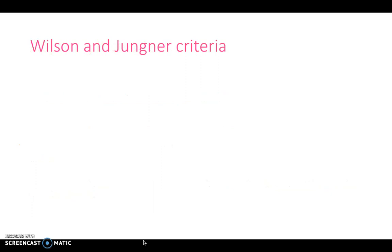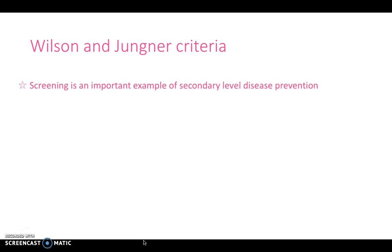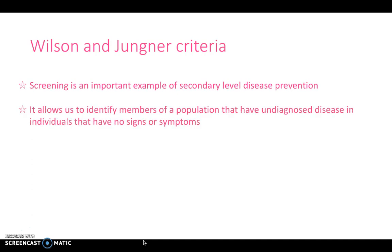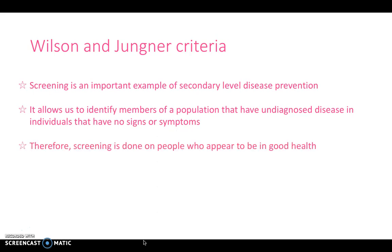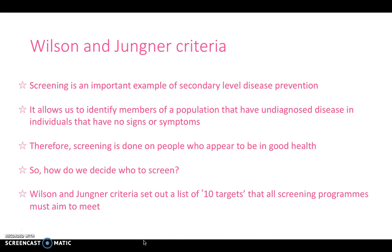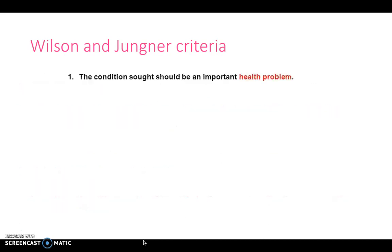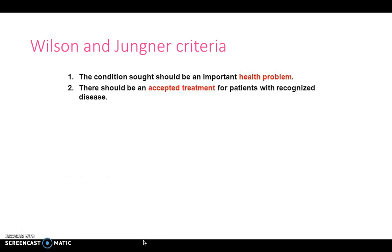Moving on, we continue with the idea of screening and testing people for disease. Screening is an important example of secondary-level disease prevention, covered in the last video. It allows us to identify members of a population who haven't yet got a disease — testing otherwise healthy individuals who fall into a category of risk. This brings us to the Wilson and Jungner criteria, which set out 10 targets that all screening programmes must aim to meet. The first is that the condition sought should be an important health problem, and there should be an accepted treatment for patients with recognised disease.